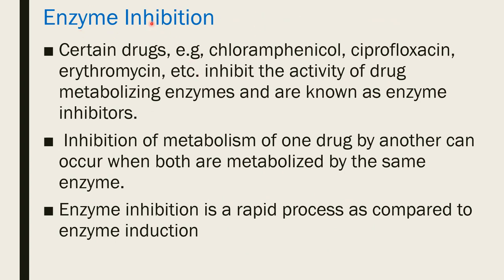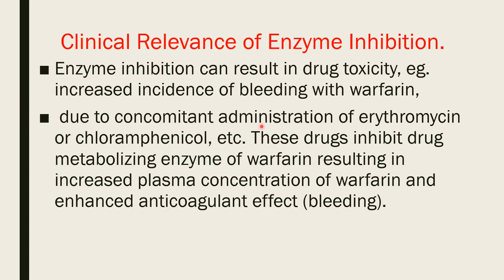Enzyme inhibition — certain drugs like chloramphenicol, ciprofloxacin, and erythromycin inhibit the activity of drug-metabolizing enzymes and are known as enzyme inhibitors. Inhibition of metabolism of one drug by another can occur when both are metabolized by the same enzyme. Enzyme inhibition is a rapid process compared to enzyme induction. Clinically, enzyme inhibition can result in drug toxicity — for example, increased incidence of bleeding with warfarin, as reduced metabolism retains the drug in the body. Erythromycin and chloramphenicol inhibit the metabolizing enzyme of warfarin, increasing its plasma concentration and enhancing anticoagulant effect, leading to bleeding.